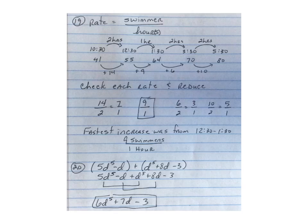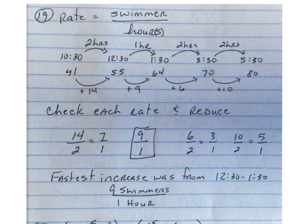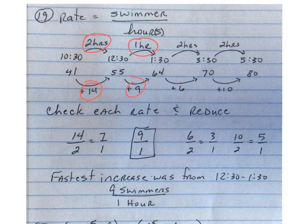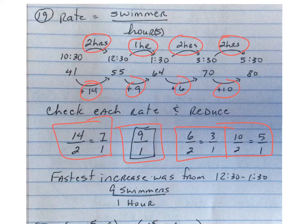On number 19, you had to find the rate for each segment. So in this case, notice I did 14 over 2, 9 over 1, 6 over 2, 10 over 2. So what I did here was I reduced them all down. And the one that had the highest rate was the 9 over 1, and that was the fastest increase. You have to put in a little term here, so fastest increase was from 12:30 to 1:30, and that was 9 swimmers per hour.